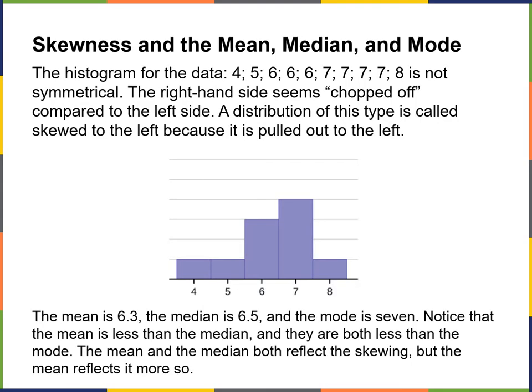Looking at skewness: this histogram for the data is not symmetrical — the right-hand side seems chopped off compared to the left side. A distribution of this type is called skewed to the left because it is being pulled out to the left — on the left side of this distribution it's shorter, like going up a hill. The mean here is 6.3, the median is 6.5, and the mode is 7. Notice the mean is less than the median and they're both less than the mode — the mean and median both reflect the skewing, but the mean reflects it more.